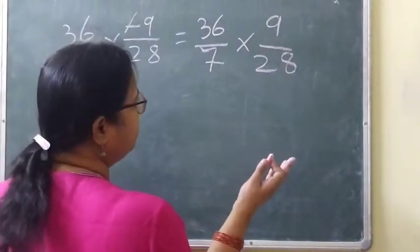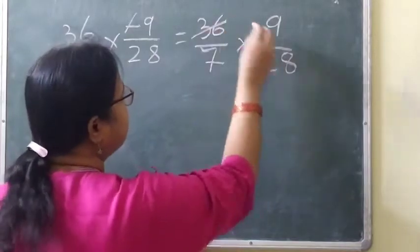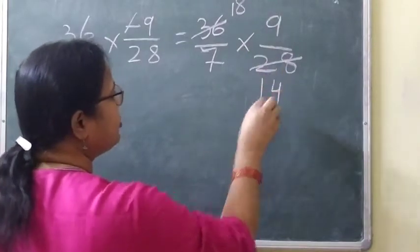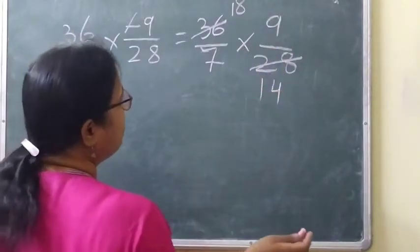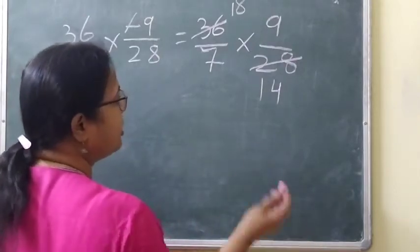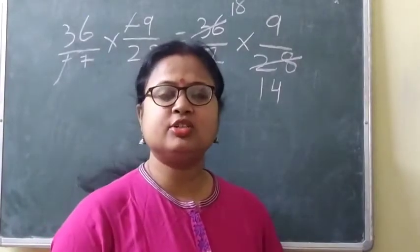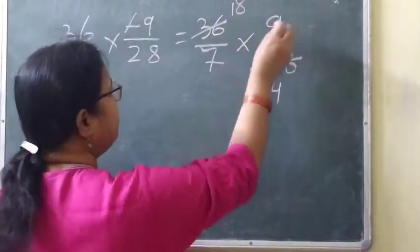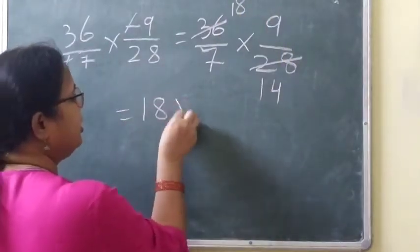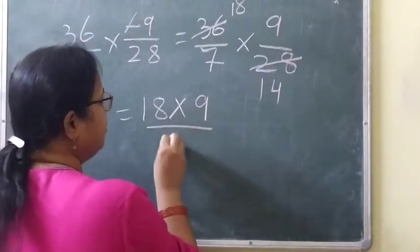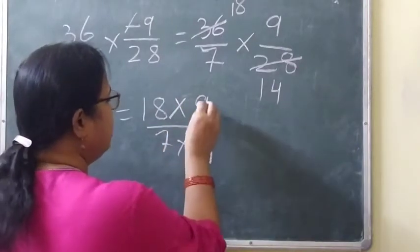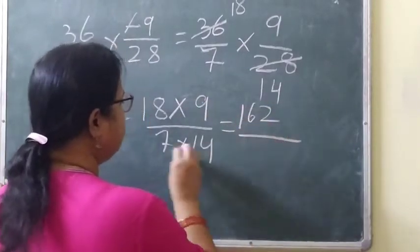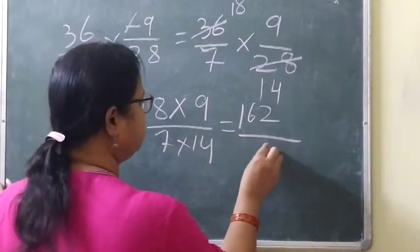Now check — can we cancel any number? 2 is common: two 1s are 2 and two 8s are 16; two 1s are 2 and two 4s are 8. Can we cancel further? No, we cannot cancel any other number because there is no common factor. So we will multiply: we have 18 into 9 by 7 into 14, which gives us 162 by 98.